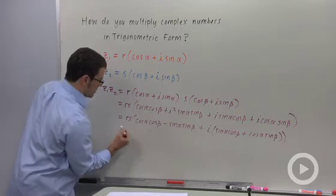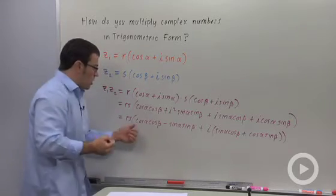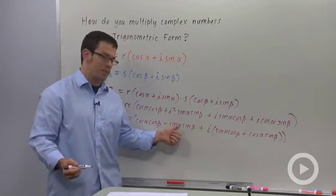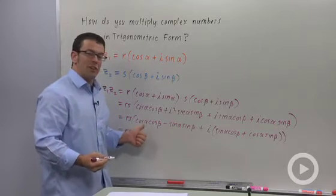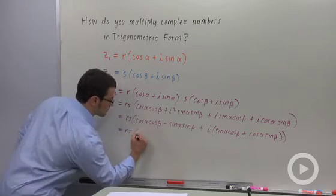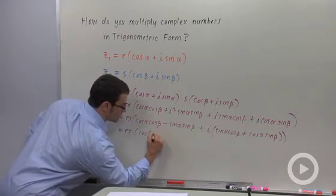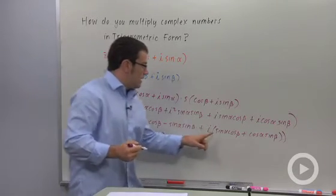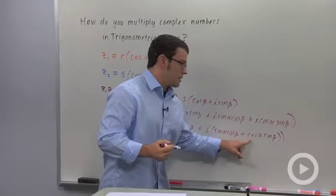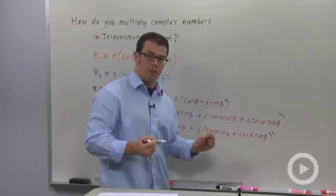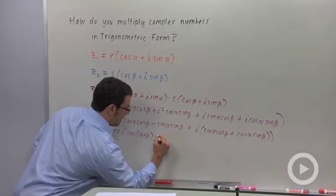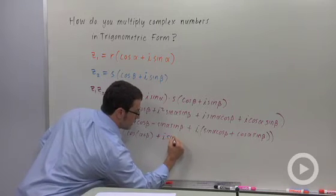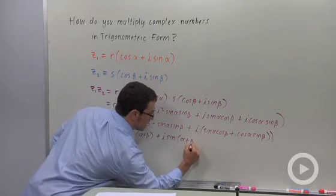Yes, what are these expressions here? Cosine alpha cosine beta minus sine alpha sine beta is the cosine of alpha plus beta, right? The cosine of the sum formula. And sine alpha cosine beta plus cosine alpha sine beta, that's the sine of alpha plus beta. Don't forget the I. So I times the sine of alpha plus beta.